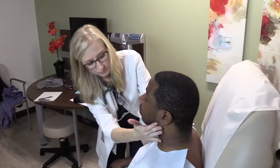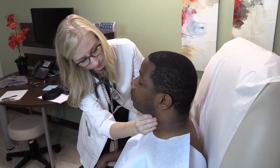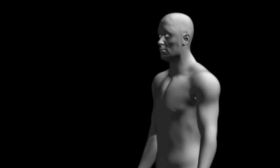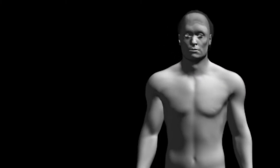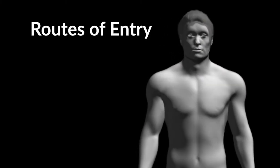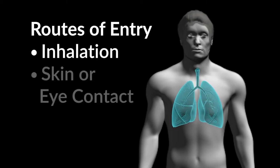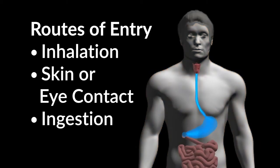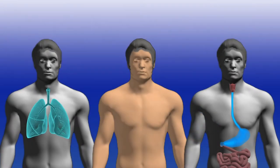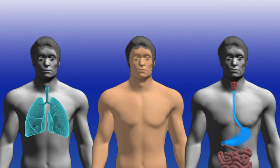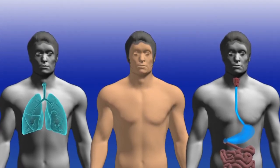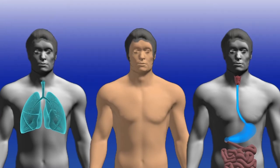For a chemical to cause health effects, it must make contact with or enter the body. The three primary routes of entry through which this can occur are inhalation or breathing, skin or eye contact, and ingestion or swallowing. Be aware of these routes of entry when handling MDI. If overexposure by any route occurs, seek immediate medical attention.